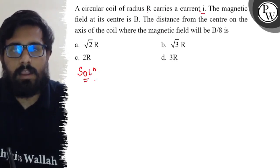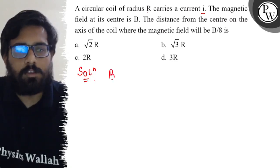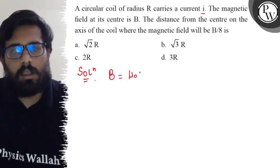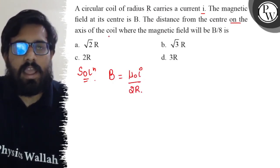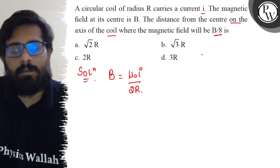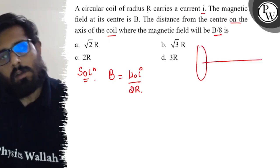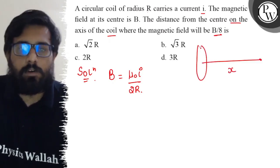So here in this question we have a circular coil of radius R carrying a current i. The magnetic field at its center is B, so B can be written as μ₀i upon 2R. The distance from the center on the axis of the coil where the magnetic field will be B by 8.